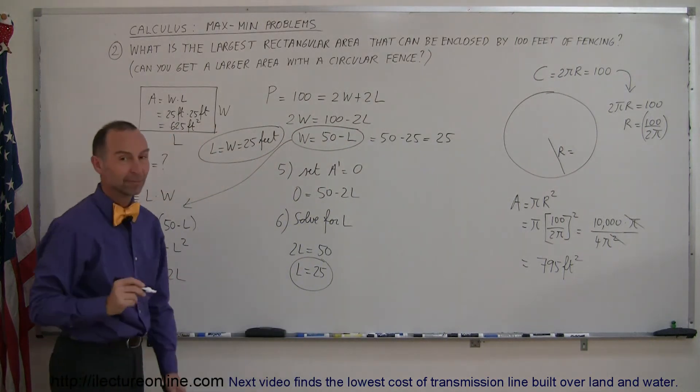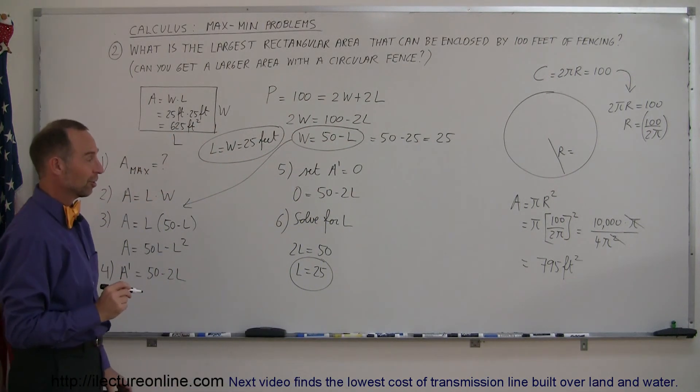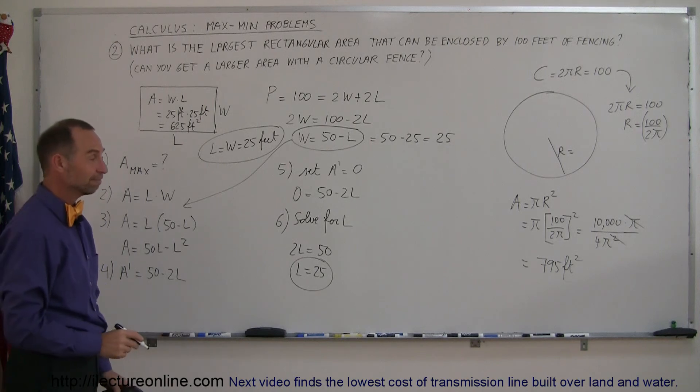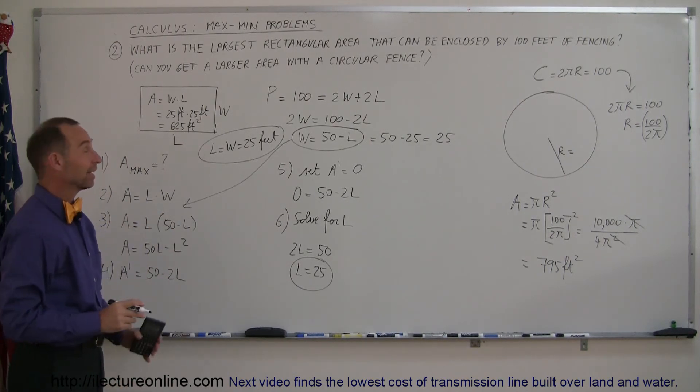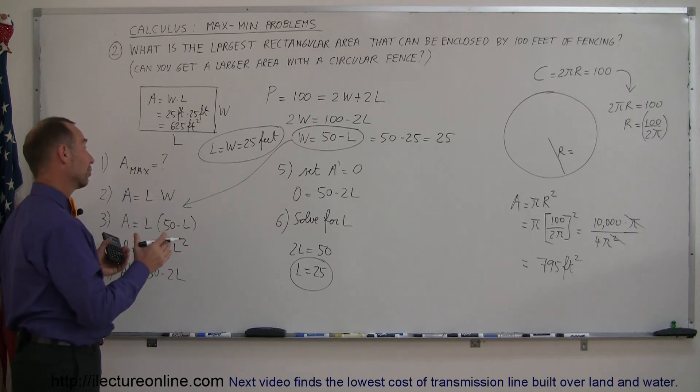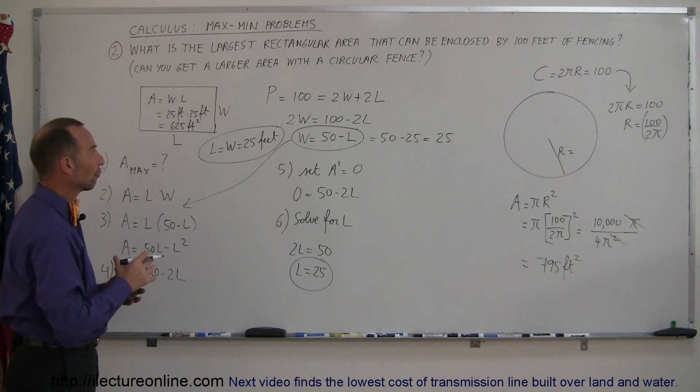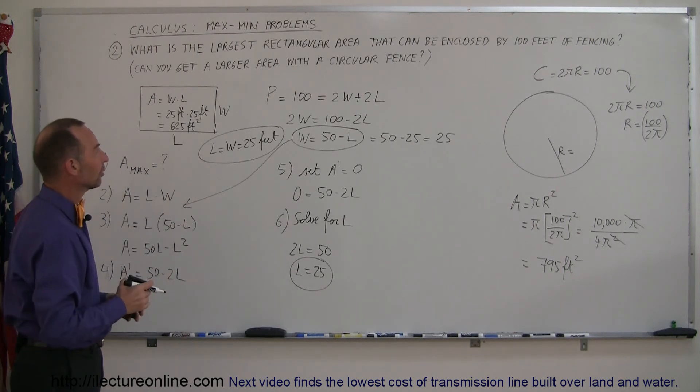We would end up with an area that's slightly bigger than 795 square feet. And, oh, look at that. If you want a little bit bigger area for a sheep or your cow, and you only have 100 feet of fencing, make it into a circle rather than a square. But if it has to be rectangular,